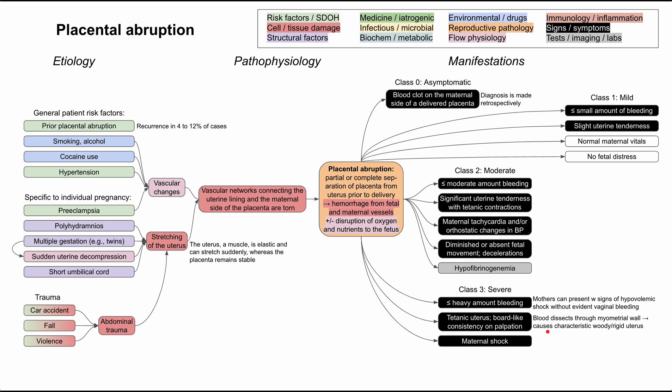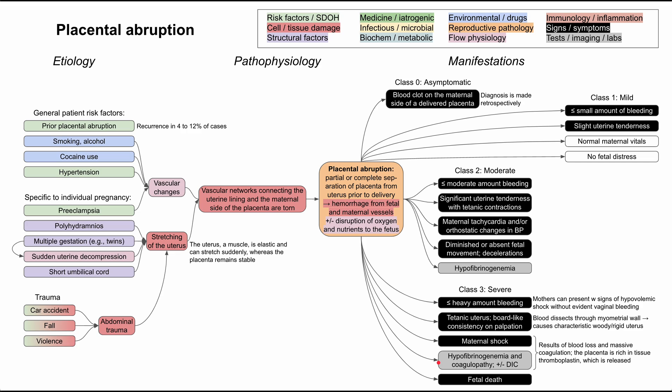In addition, mom can have complete maternal shock — hypotension and tachycardia — and more significant lab value abnormalities. You can have hypofibrinogenemia as well as coagulopathies, and this can even lead to a DIC-like picture: disseminated intravascular coagulation. This happens because of blood loss, massive coagulation, and the fact that the placenta is very rich in tissue thromboplastin, which is released throughout the body in severe cases. Unfortunately, fetal death can also occur in this very severe class. This has been a short video on placental abruption — I hope it was helpful, and thank you for listening.